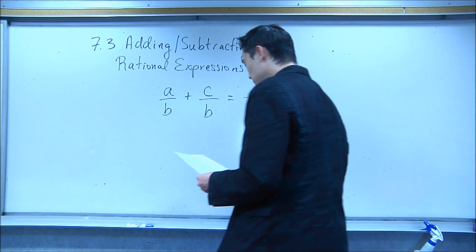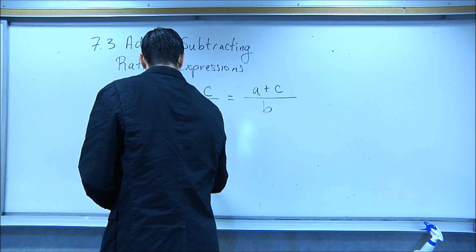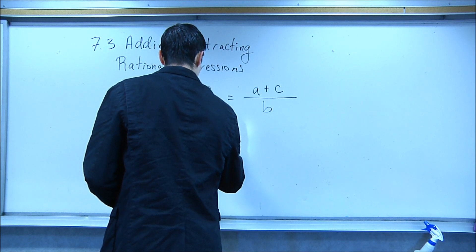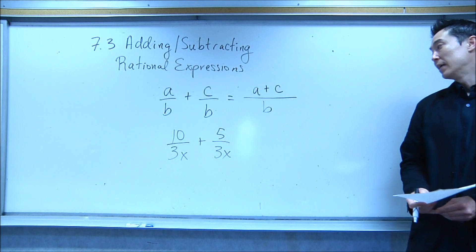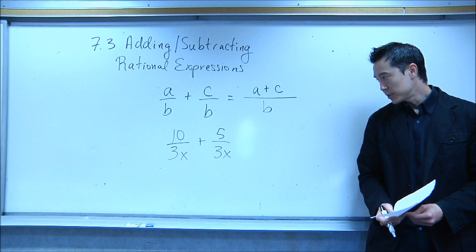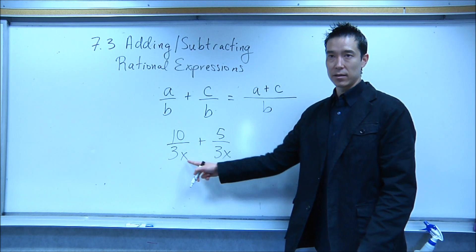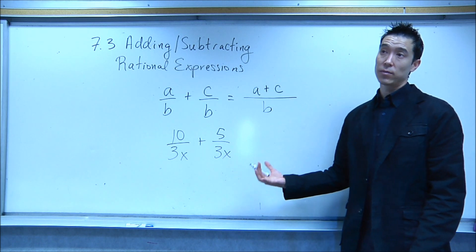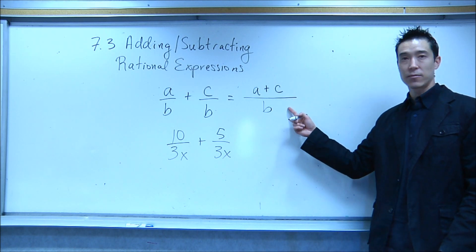Alright, let's start off with this example. 10 over 3x plus 5 over 3x, if you are given this problem. The first thing to notice is we're adding two fractions. The second thing to notice is they already have like denominators. And that's great, because when the denominators are the same, that's most of the work. All I have to do is stick with this rule here.